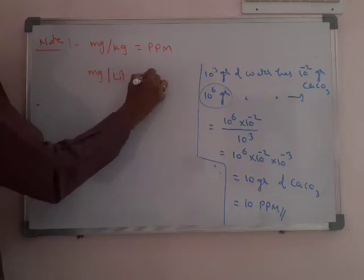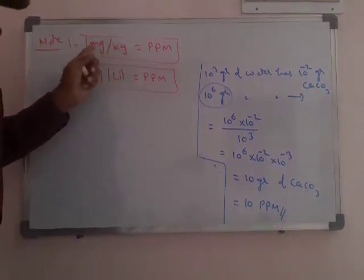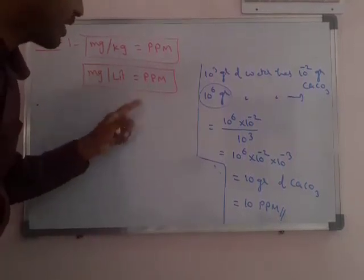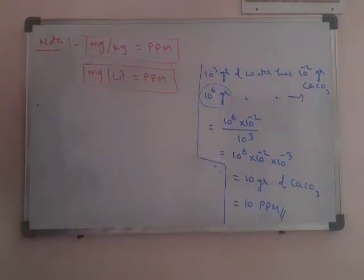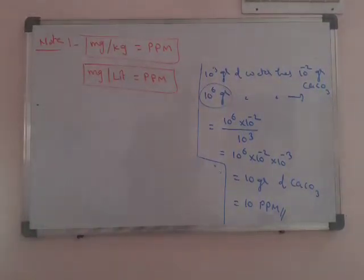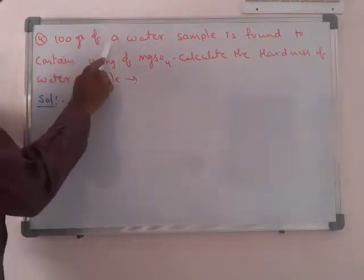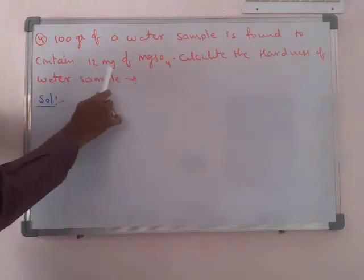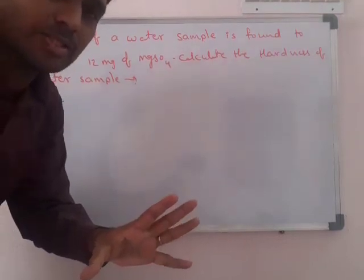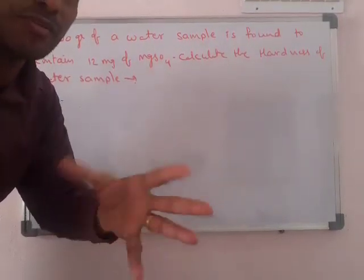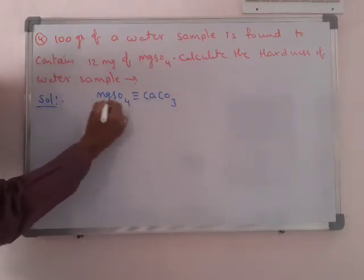Next problem: a 100 gram water sample is found to contain 12 milligrams of MgSO₄. This causes permanent hardness. Calculate the hardness of the water sample. We convert the hardness-causing compound in terms of CaCO₃. Compare molecular weights: MgSO₄ is 120, CaCO₃ is 100.